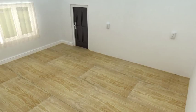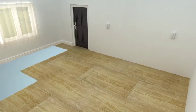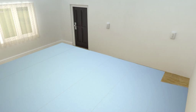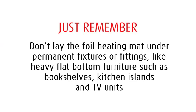Ensure the floor surface is smooth, dry, and free from dust and debris such as staples or nails that may damage the foil panels. Lay down the thermal insulation barrier or the regular underlayment padding provided by your flooring supplier. Remember that Warm-up foil heating mats must not be laid under permanent fixtures or fittings like heavy flat-bottom furniture such as bookshelves, kitchen islands, and TV units.